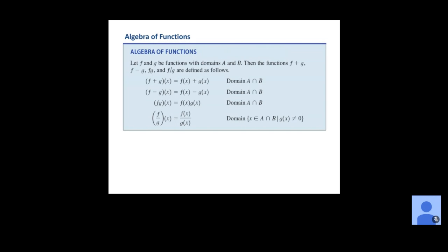We're going to start with just the algebra of functions — addition, subtraction, multiplication, division. If we have two functions f and g with domains A and B, then f+g, f-g, f·g, and f÷g are just f(x)+g(x), f(x)-g(x), f(x)·g(x), and f(x)÷g(x). For the domain of combined functions, we look at the intersection of the two domains. The one additional restriction with division is that g(x) cannot be zero, since we can't divide by zero.